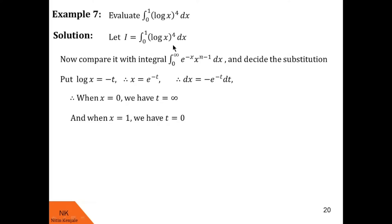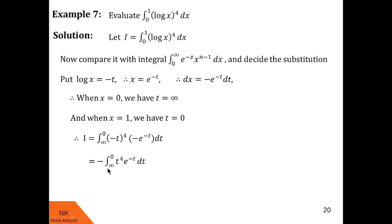Now we transform this integral i from variable x to variable t. So i becomes an integral from infinity to 0 of (-t)⁴ into dx which is -e^(-t) dt. (-t)⁴ is just t⁴. Taking out the minus sign, we have e^(-t) dt. According to the property of integral calculus, if we swap these limits, we get a minus sign outside, so those two minus signs give a plus sign. Now the integral has limits 0 to infinity: e^(-t) · t⁴ dt. By the definition of gamma of n, this equals gamma(4+1), that is gamma(5). This is the value of the given integral.